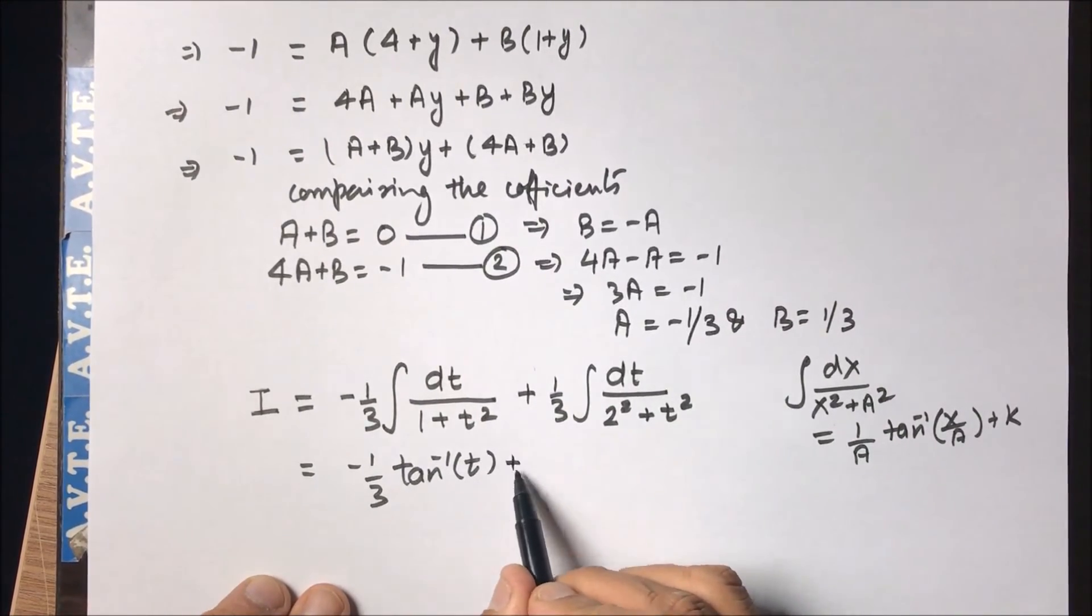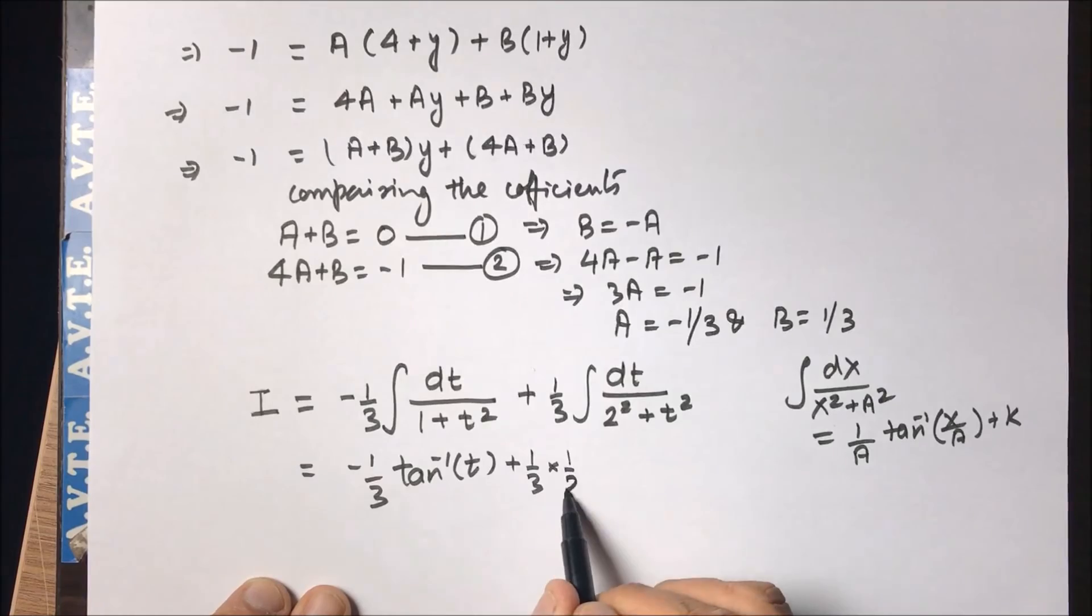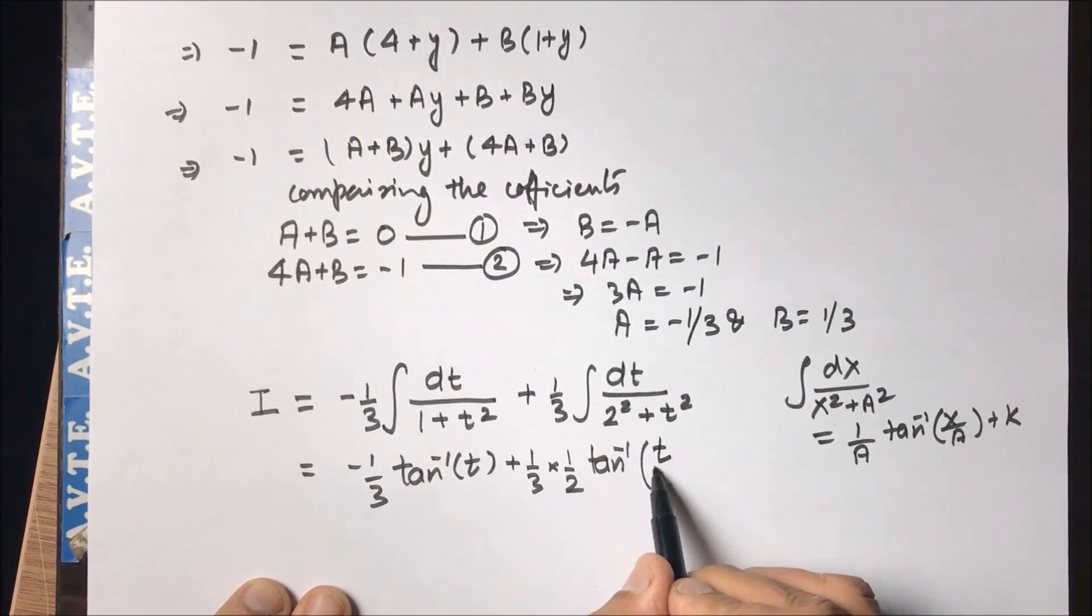So we apply the same. So we get one by three into one by two tan inverse of t by two.